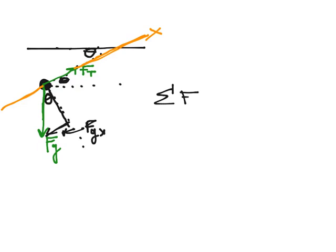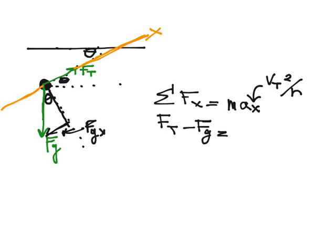So writing out Newton's second law, we have sigma FX equals MAX. And because this thing is swinging around in a circle, we know that AX is equal to VT squared divided by R. So on the left-hand side of our equation, we have our tension force, that's what we're trying to solve for, minus FGX is equal to M VT squared over R. And remember, our radius is the length of our string, so I'm going to put M VT squared over L.